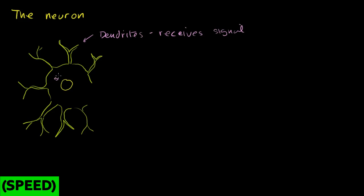And then, so this is the dendrite, this right here is the soma. Soma means body, this is the body of the neuron. And then we have kind of a, you can almost view it as a tail of the neuron, it's called the axon.